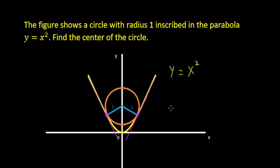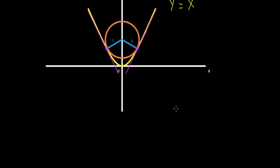Since we know that the derivative of a function gives the slope of the tangent line at a particular point, and this tangent line is tangent to both the circle and the parabola, we can find the intersection point by finding where both curves have the same slope — equating their derivatives.